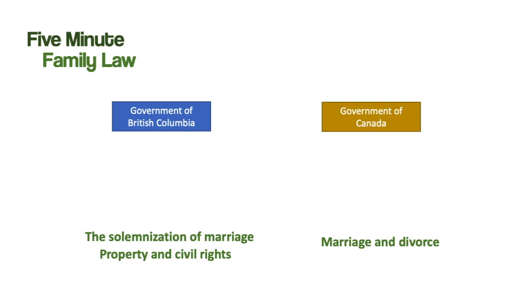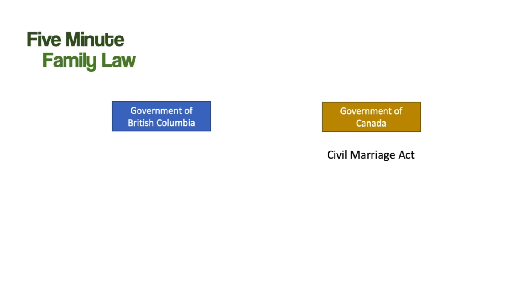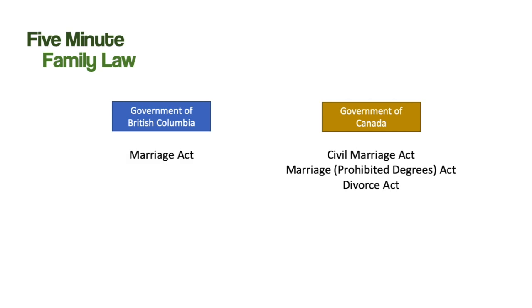The federal government's power over marriage and divorce allows it to create laws such as the Civil Marriage Act, which says who may marry whom. The Marriage Prohibited Degrees Act talks about the degree of relatedness by blood or by adoption within which one may not marry — in other words, you can't marry your mom or dad, but you can marry your cousin. It also gives us the Divorce Act. The Government of British Columbia's powers over the solemnization of marriage gives us the Marriage Act, and its powers over property and civil rights give us the Family Law Act.